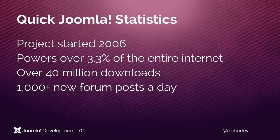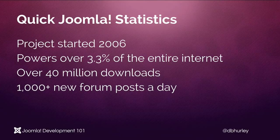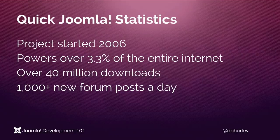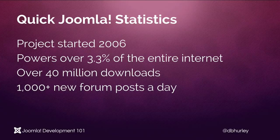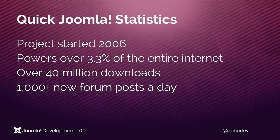The project itself was started in 2006. It was originally, before that date, under the name Mambo CMS. In 2006, the Joomla project split or forked from the Mambo CMS and continued under the Joomla name. Since that time, it has grown extensively around the world. Currently, in 2013, Joomla powers over 3.3% of the entire internet. Additionally, it has over 40 million downloads of the software. And the community which surrounds Joomla is growing massively and constantly.